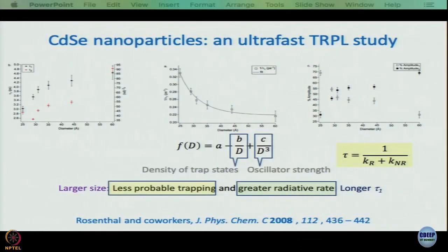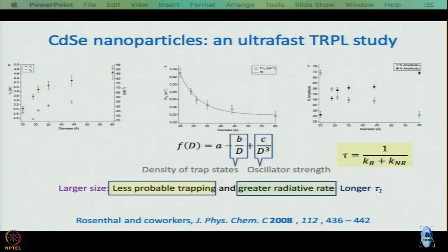In the last module, we started talking about semiconductor nanocrystals. We discussed Rosenthal's work, where they obtained a biexponential decay for cadmium selenide nanoparticles. The important thing we learned was that every time constant has a contribution from a radiative part and a non-radiative part. There can be special cases when one of the amplitudes can be zero, but the general scenario is that every time constant is associated with not just one radiative or non-radiative process.